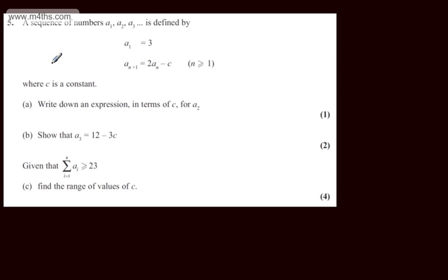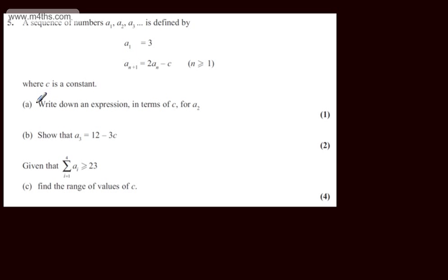In question number 5, we're told a sequence of numbers a_1, a_2, a_3, and so on is defined by a_1 = 3, and a_{n+1} = 2a_n - c, where n is greater than or equal to 1, and c is a constant.